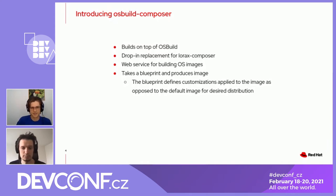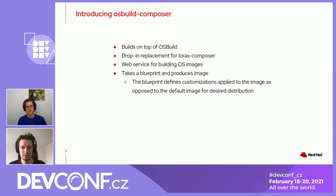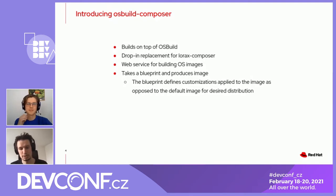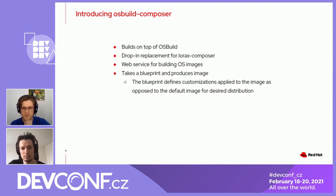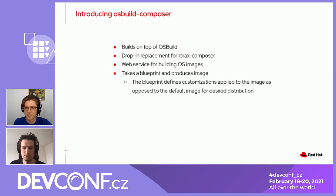The difference from OS Build is that now, instead of writing a huge JSON file, you simply define customizations that should be applied to the default distribution image. Inside OS Build Composer, we define what it means to be a default Fedora image, for example. Then we apply these customizations so that you can get the image you want.